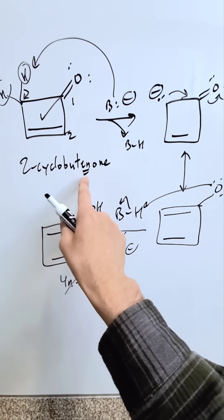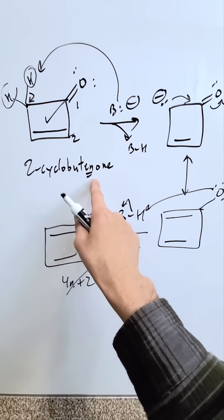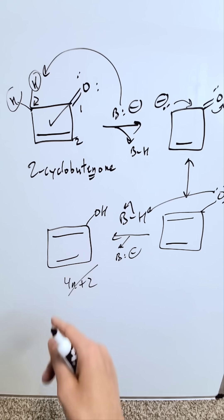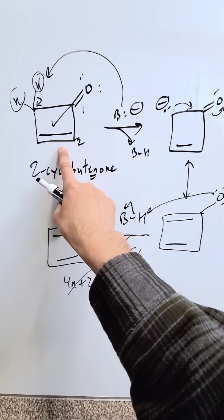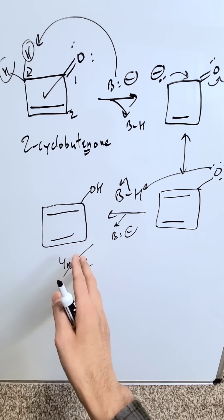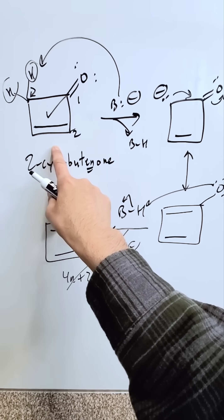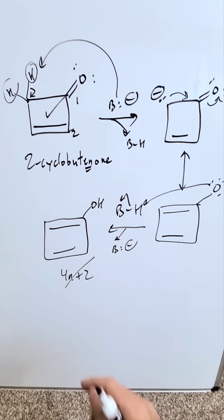You're going to have the 2-cyclobutenone remain as such because the keto version, the tautomer here, favors aromaticity and it is aromatic. You're going to see none of this enol generate and the keto form is the only form which is going to be present here at the end of the reaction.